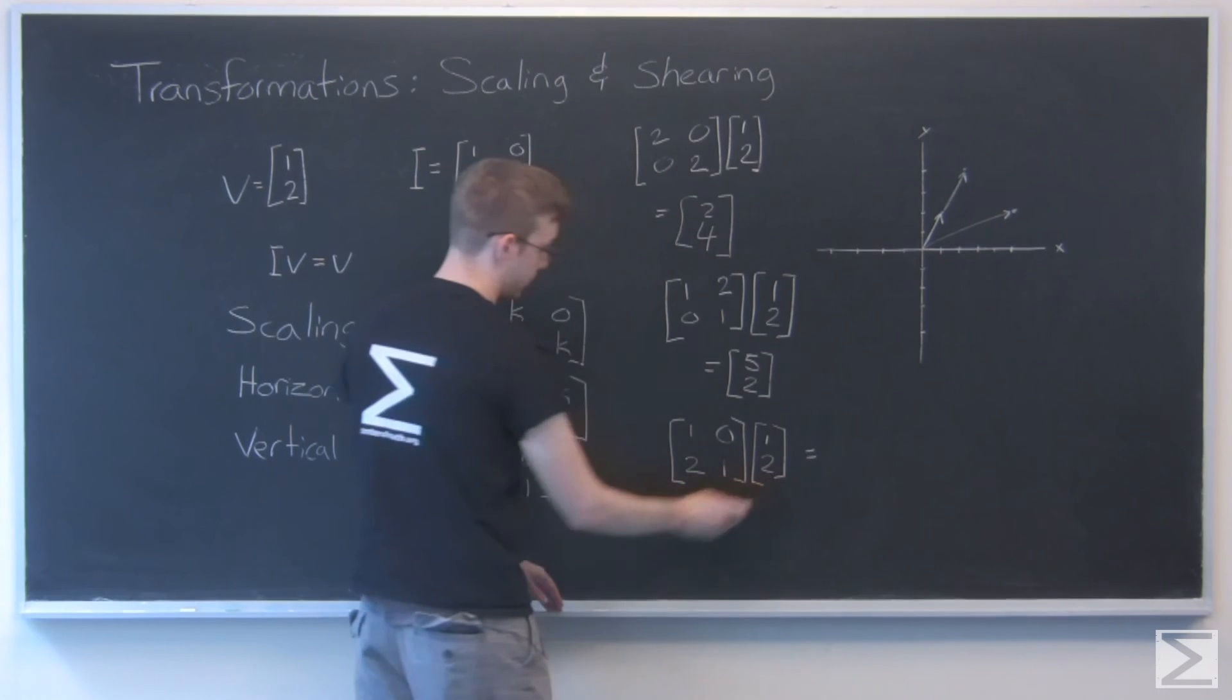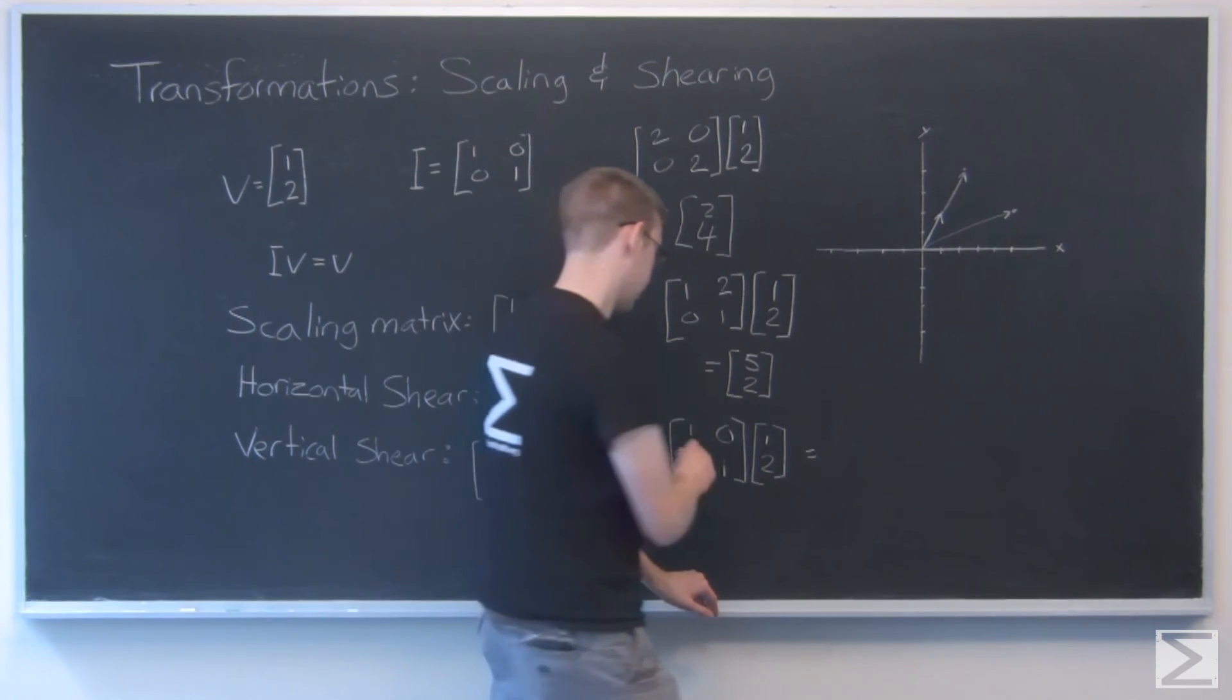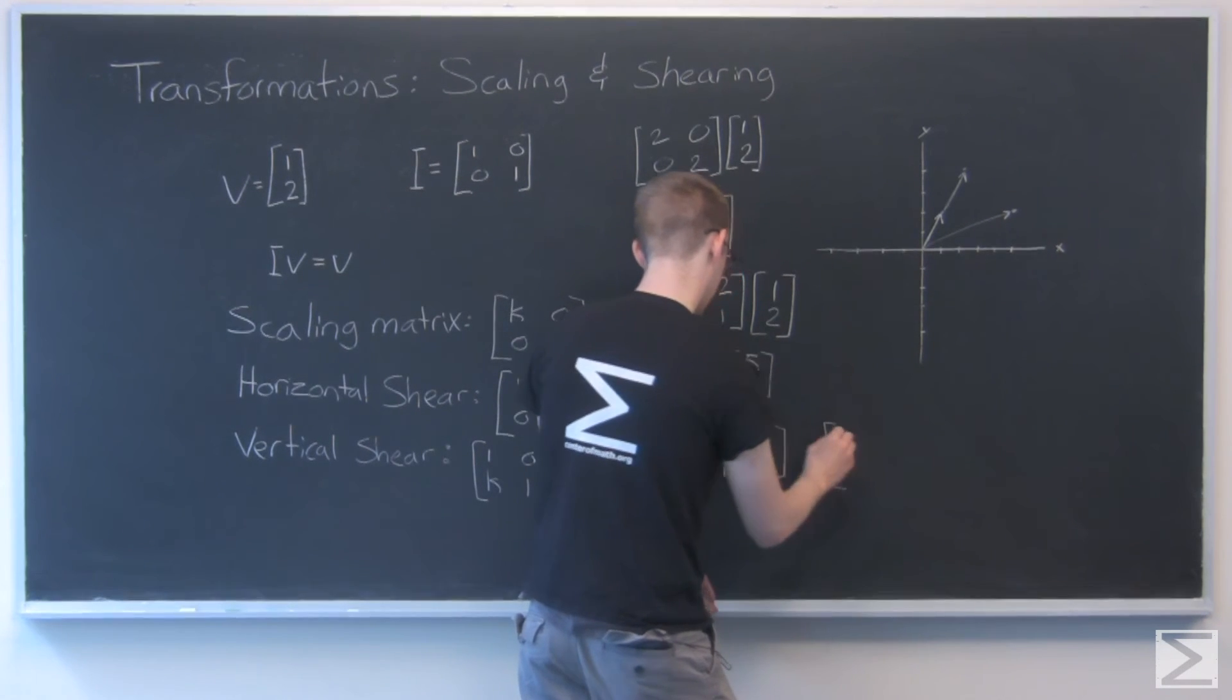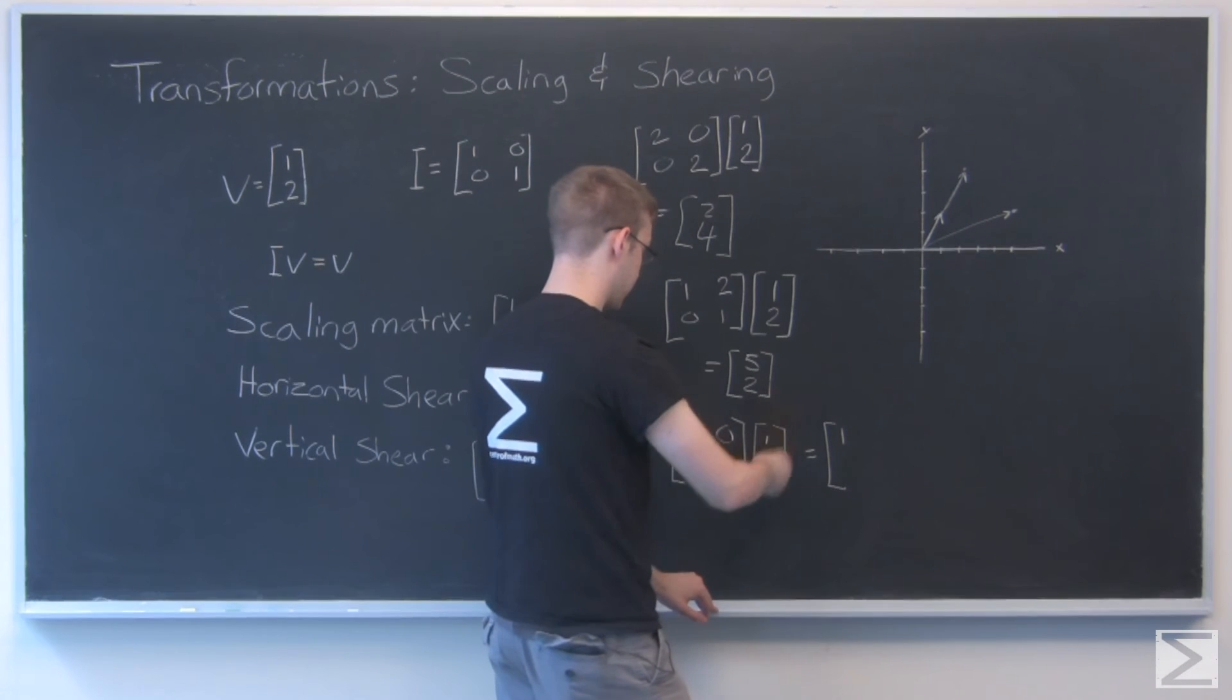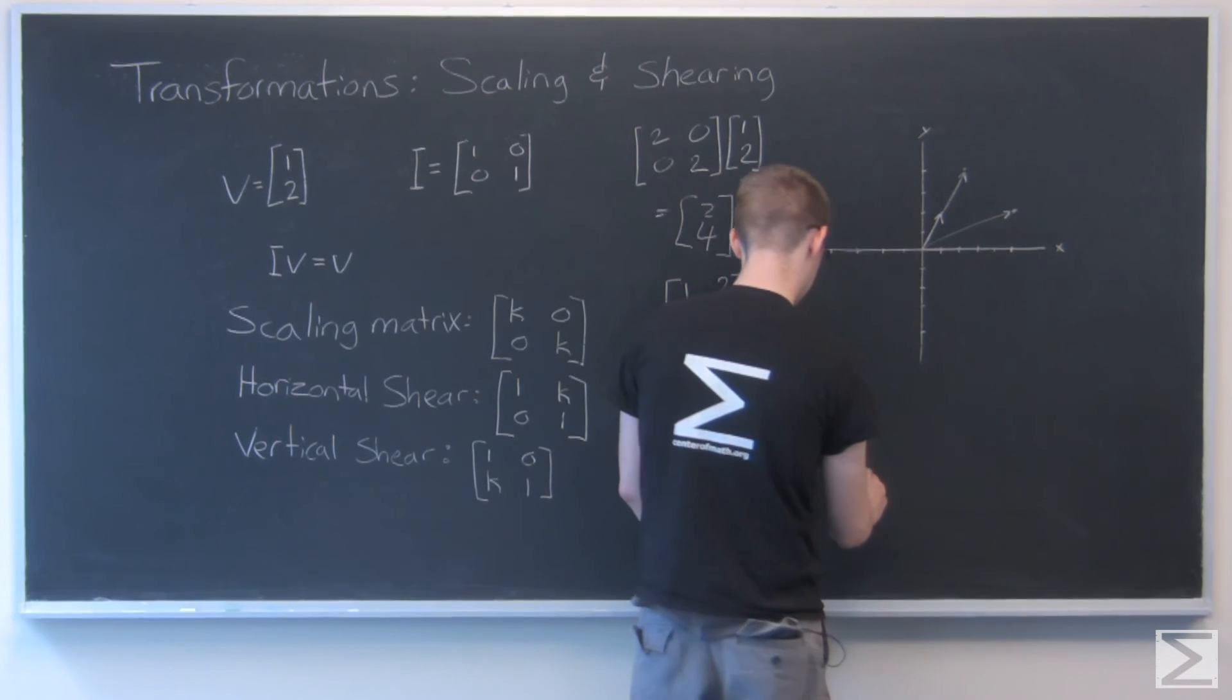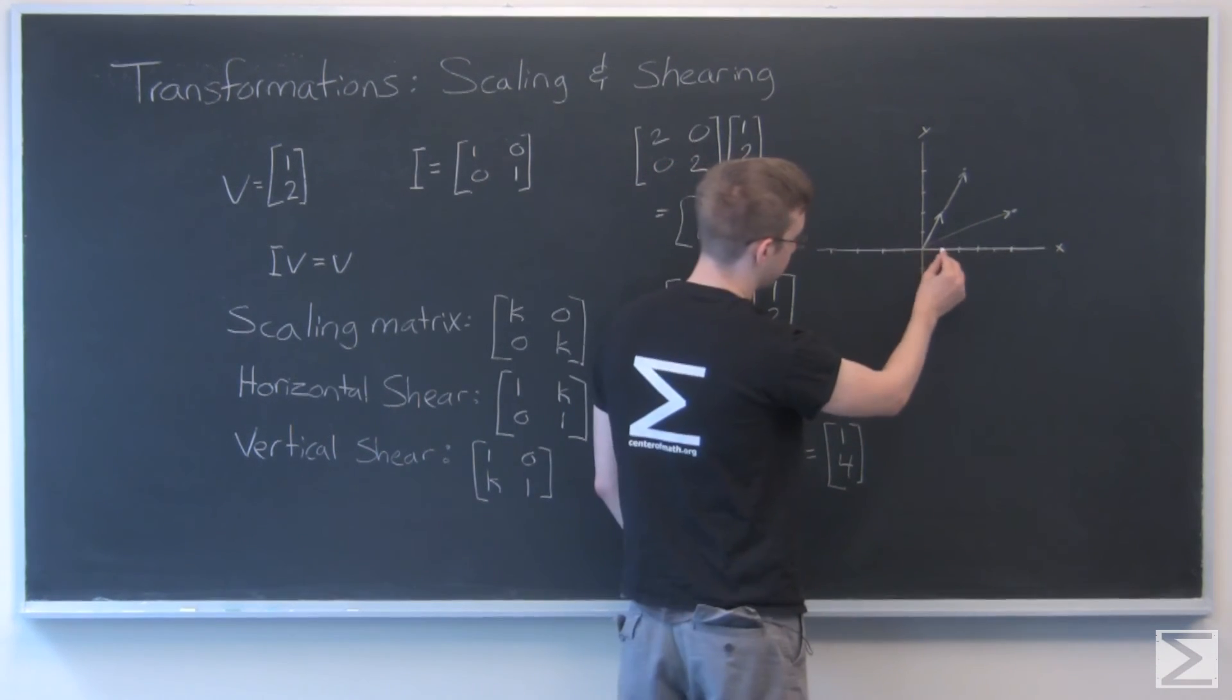So we're transforming the vector 1, 2 by a vertical shear of 2. So cross multiply, we get 1, not cross multiply, you know, rows and columns. That's 1 and 2 times 1 plus 2 times 1, that's 4. So I'm going to graph this. I go 1 and up 4. 1, 2, 3, 4.